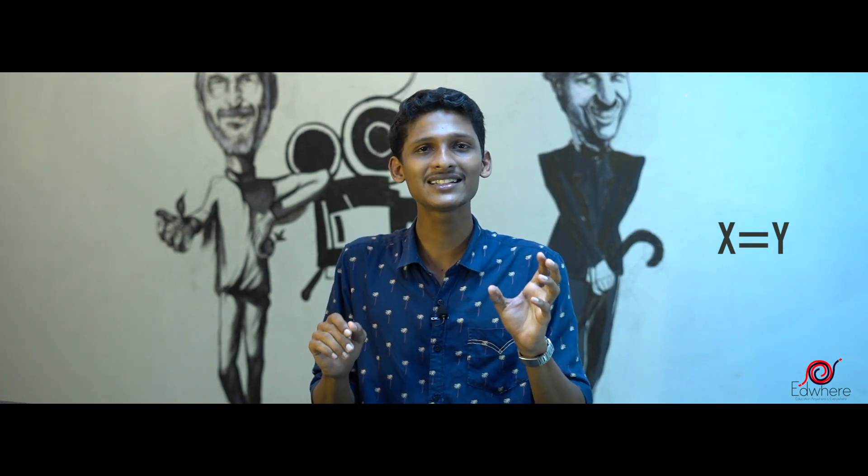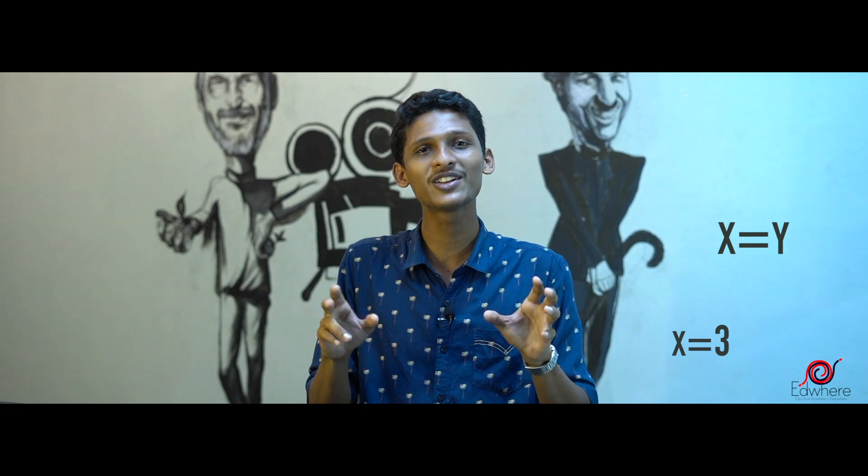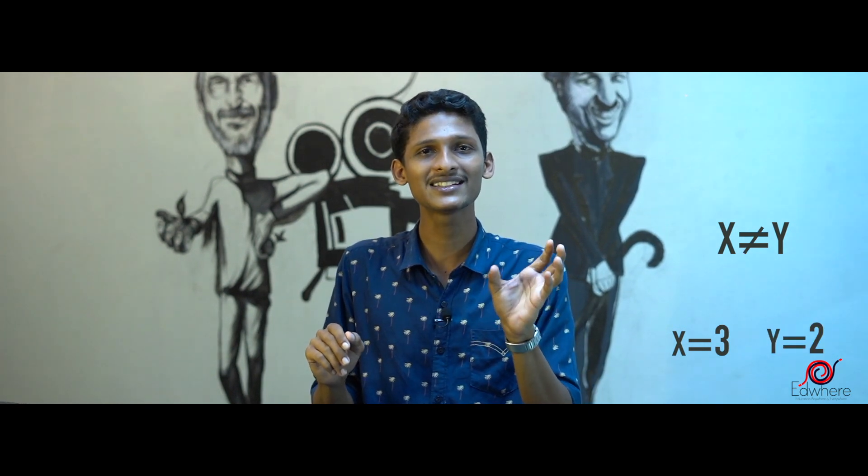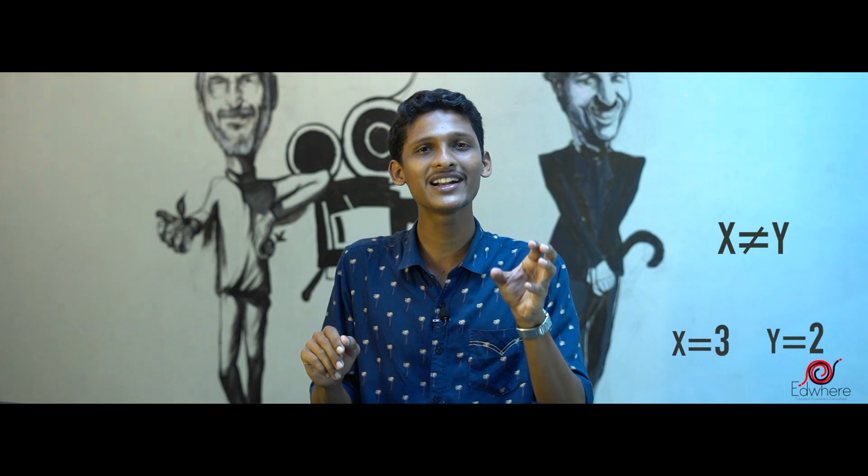Let's say x equals y. When x equals 1 and y equals 1, x equals y is true. But when x equals 3 and y equals 2, x equals y is wrong. That's why x equals y is not an identity. For an identity, the statement must be true for any variable and any value.